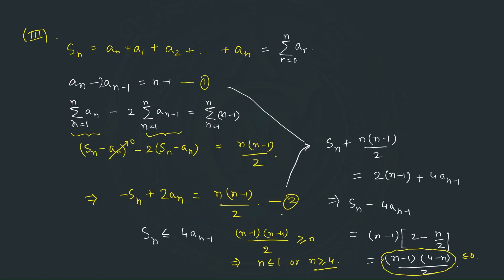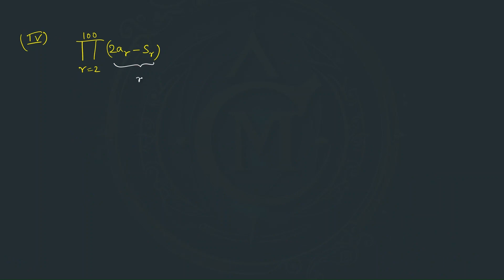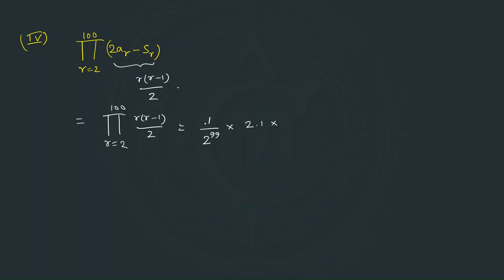From Relation 2 we know 2aₙ − Sₙ = n(n−1)/2. Substituting r for n, the product becomes the product from r = 2 to 100 of r(r−1)/2. Separating the factor 1/2 raised to 99 times, the numerator product expands as: (2×1)(3×2)(4×3)...(100×99).